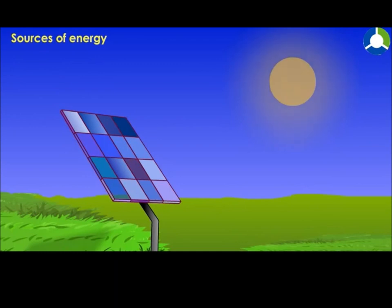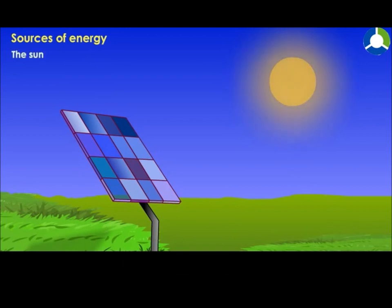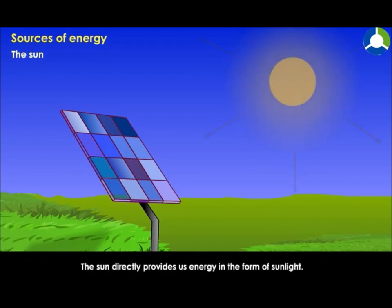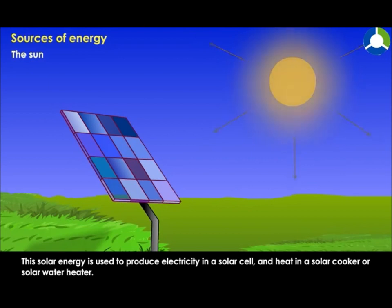Sources of energy: there are various sources of energy. The Sun is the primary source of energy; most other forms of energy can be traced back to the Sun. The Sun directly provides us energy in the form of sunlight, and this solar energy is used to produce electricity in a solar cell.